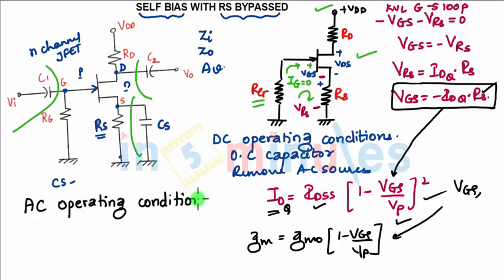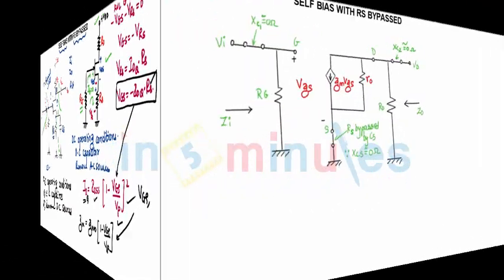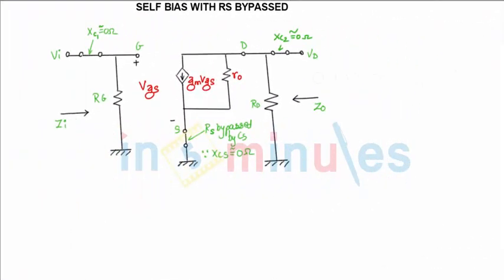What are the AC operating conditions? We short circuit capacitors and remove DC sources. So how the circuit will look under AC operating condition. This is the circuit under AC operating conditions: capacitor short circuited, output capacitor short circuited, bypass capacitor is shorted.